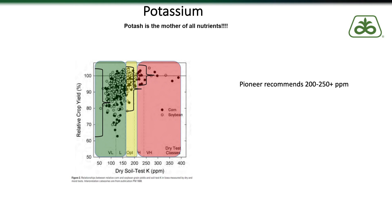In the soil sampling initiative that I talked about in our last episode, we took thousands of soil tests in our customers' fields, and when we looked at the potassium we found that 60 percent of our customers' fields had soil test levels below 160 parts per million. This is a long ways away from the 200 to 250 that we recommend to try to maintain yield stability from year to year.